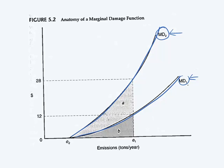If we first look at MD1, for example, if we are at e1 at the moment, then it would be $12 of marginal damage if this pollutant increases by one ton. If it increases by one unit, my damages increase by $12, and that's the marginal damage.